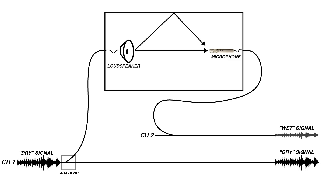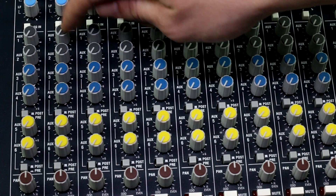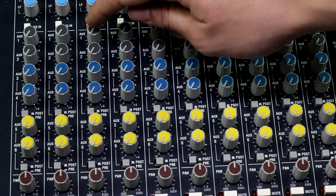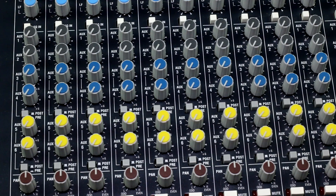Another way to use an aux output is for effects like reverb and delay. Rather than putting a reverb processor on every individual channel, you can connect one reverb to an aux output and connect the output of that reverb to an effects return channel. Now you just need to send each input channel to that aux with the aux sends.